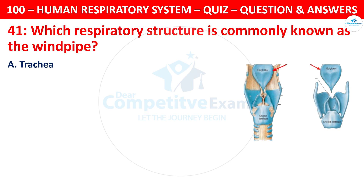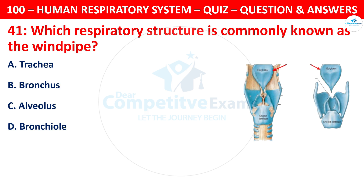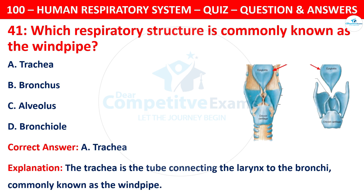Question 41: Which respiratory structure is commonly known as the windpipe? The options are: trachea, bronchus, alveolus, or bronchial. The correct answer is A — trachea. The trachea is the tube connecting the larynx to the bronchi, commonly known as the windpipe.